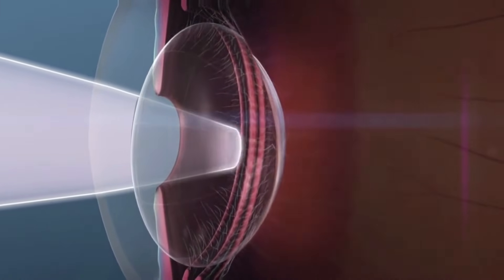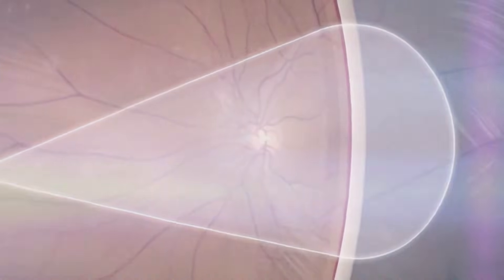Then, the lens moves light through the clear cavity called the vitreous and focuses it on the retina.